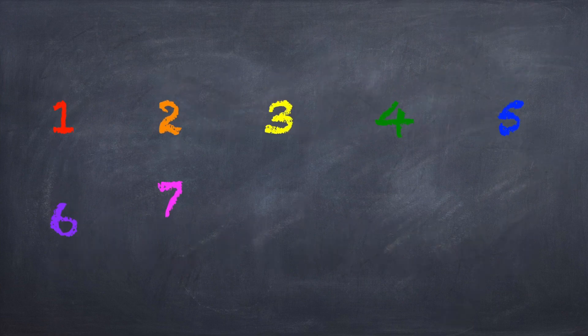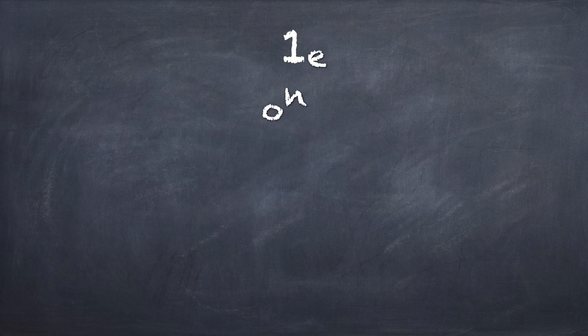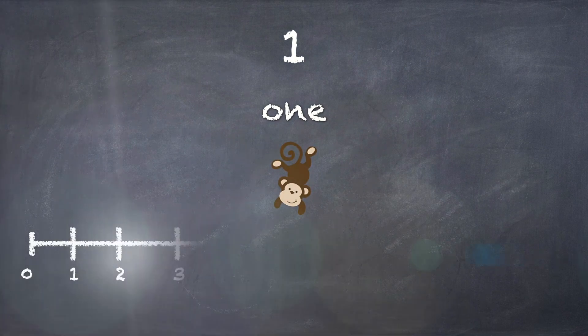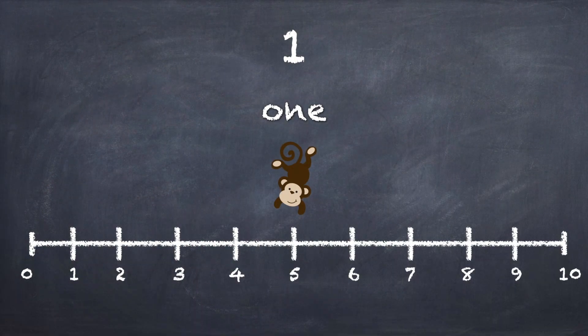Here we have our numbers 1 through 10. There are a few different ways that we can think about numbers. We can see the number itself — here's 1 — or the name of the number, that's 1 written out. We can also use numbers by pictures, so here's one picture of one monkey. The other thing we can use is a number line. We look at our number line, find the number 1, and put a little red dot on it.